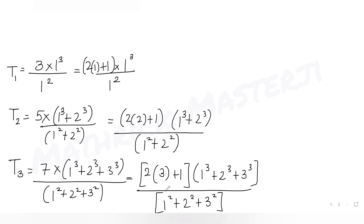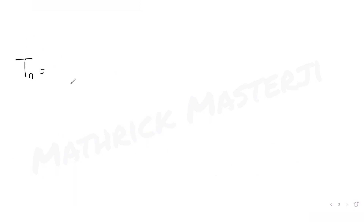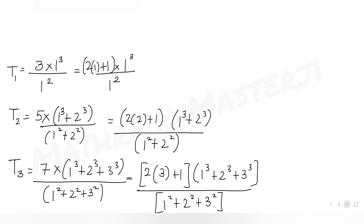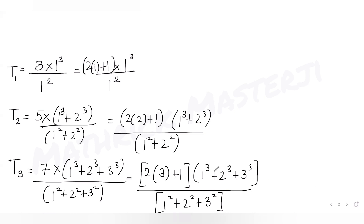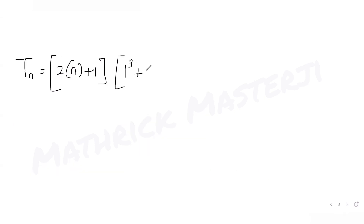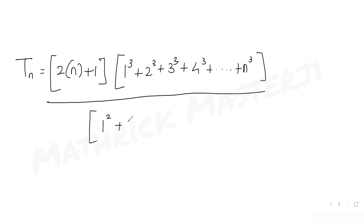So the third term uses 2 into 3 plus 1. Now if I try to find the nth term in the same fashion, I can write it as (2n + 1) times the sum of cubes from 1³ + 2³ + 3³ + 4³ up to n³, divided by the sum of squares 1² + 2² + 3² up to n².